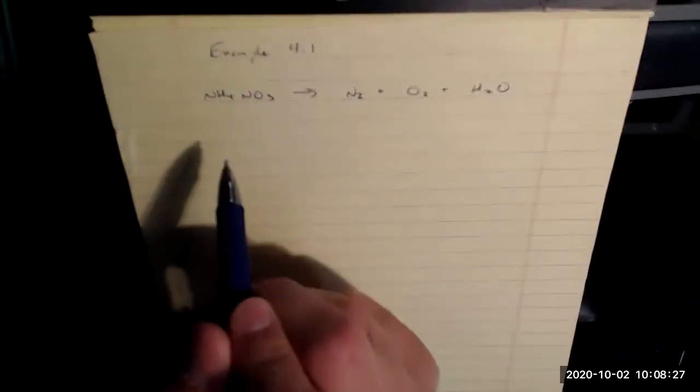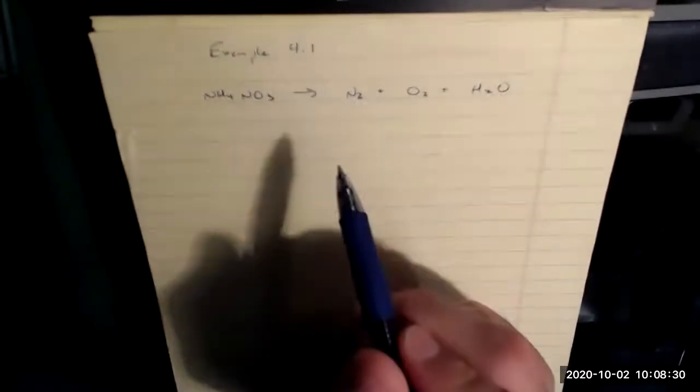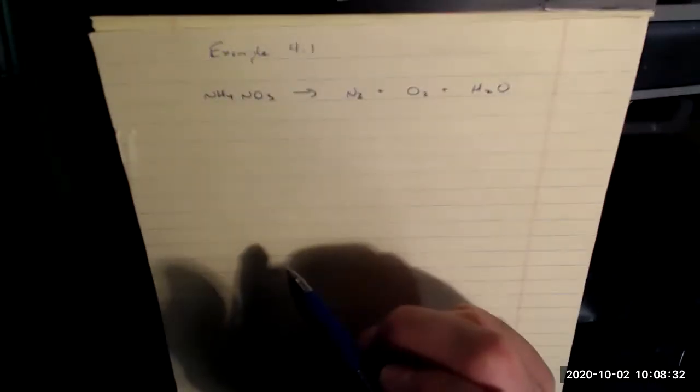Let's look at nitrogen first. One, two nitrogens on the reactant side, N2 means I have two nitrogens on the product side. So that's good.